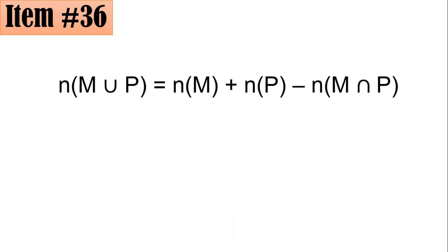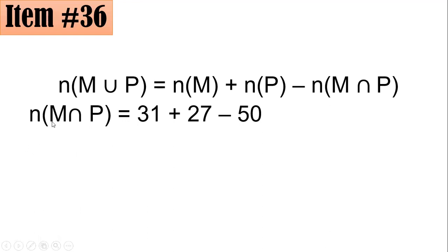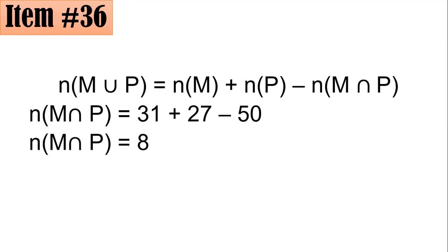We use the formula: the cardinality of the union of two sets equals the sum of the cardinalities of the two sets minus the cardinality of their intersection. Since union implies 'or,' rearranging gives us the intersection equals the sum minus the union. So 31 plus 27 minus 50 gives 58 minus 50, or 8 students, letter B.